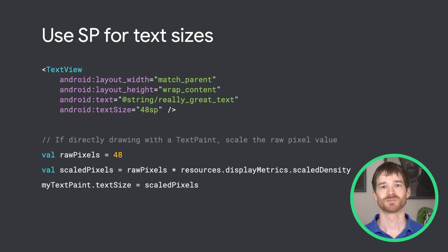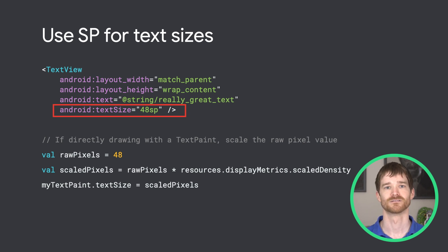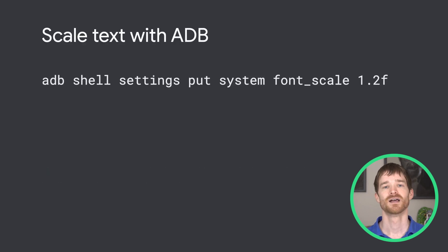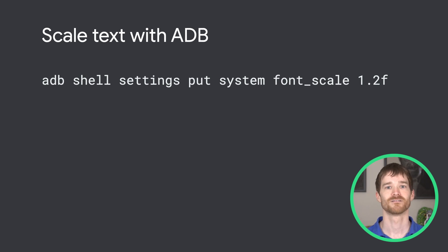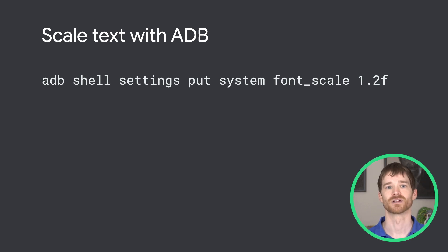Before we move on entirely from text, it's worth reminding everyone: use SP for text sizes. That's a general accessibility recommendation in Android, but it's especially important now that text scaling options are available for TV users in Android 12. Even if you don't have a TV device running Android 12, you can set the text scale by running the put system font scale ADB command. That's a great way to test your app for text scaling, as well as possible lifecycle issues when activities and fragments are recreated.